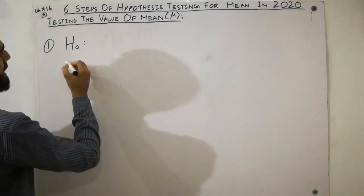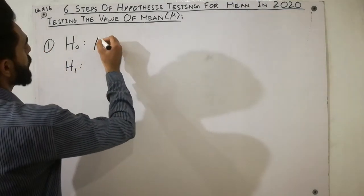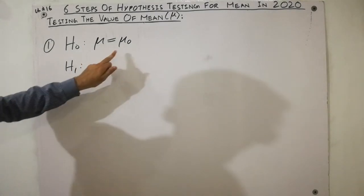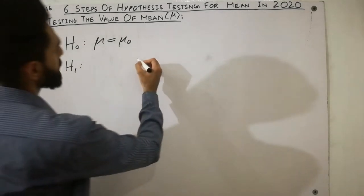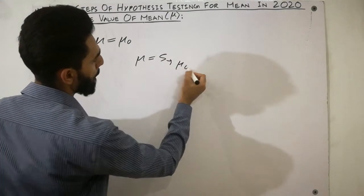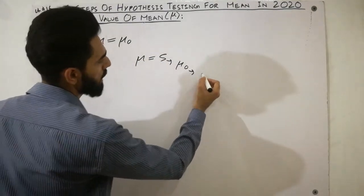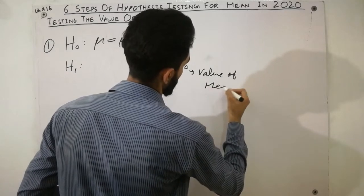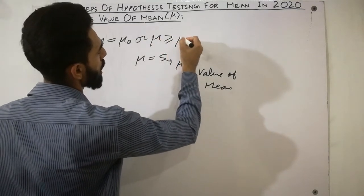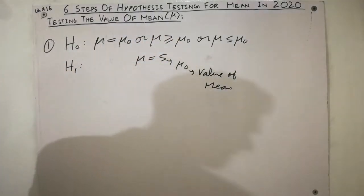Step one: the first step is the null hypothesis and the second point is the alternative hypothesis. For the null hypothesis we have mu equal to mu-naught, where mu is the population mean and mu-naught is the value of the mean — for example, mu equals five, where five is mu-naught. Other null hypothesis forms are mu greater than or equal to mu-naught, and mu less than or equal to mu-naught.